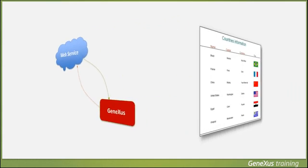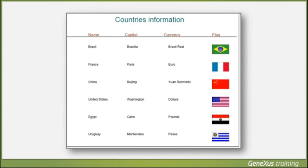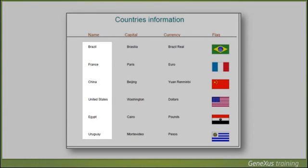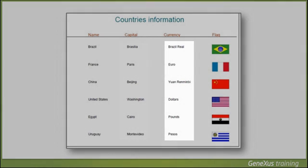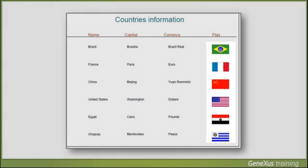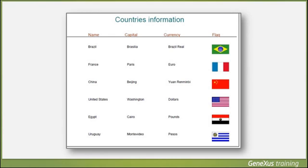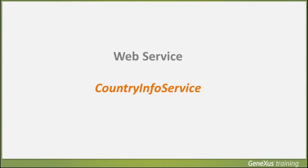Let's start by supposing that the travel agency has requested a new functionality, which is the possibility of offering customers a list of all countries, showing for each of them its capital city, its currency, and its flag. To solve this, we will invoke a specific web service which, after searching, we've found published. Its name is CountryInfoService, and it's capable of returning the referred information and more.